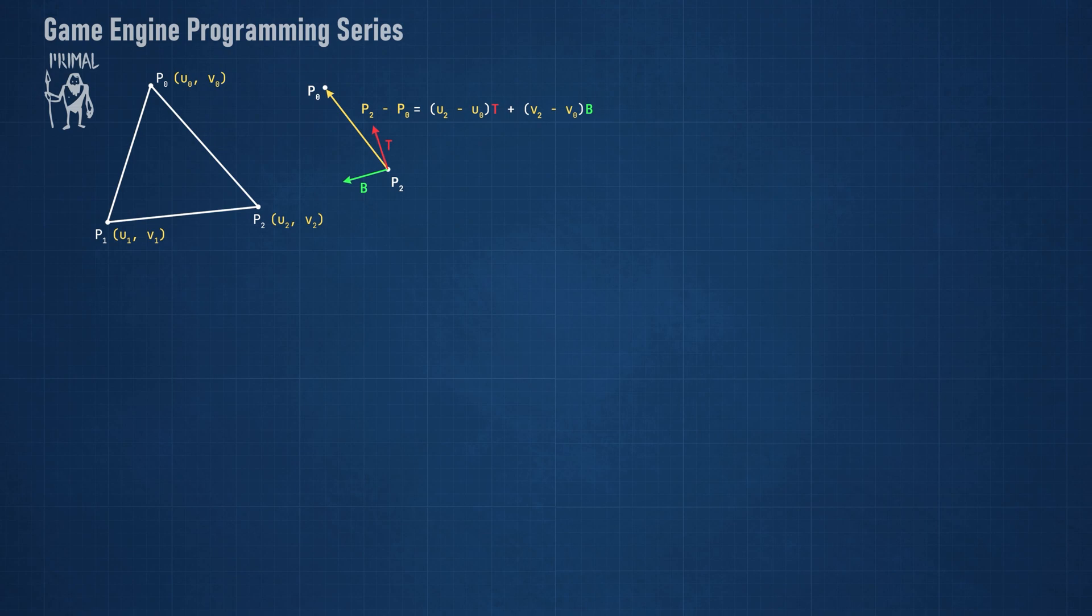T and B are 3D vectors in object space that form a 2D coordinate system on the surface of the triangle, such that the edge vector of the triangle is the same in this coordinate system as it is in object space. We can try to find T and B by taking the edge vectors and write two equations with two unknowns which can be solved using a bit of linear algebra.